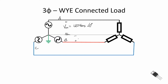Our line-to-neutral for our B phase is 120 volts RMS at an angle of minus 120 degrees — it lags our A phase by 120 degrees. Our C phase, going from line to neutral, is 120 volts RMS and it lags the B phase by 120 degrees, or conversely we can say it leads our A phase by 120 degrees. Again, we show a Y-connected load.